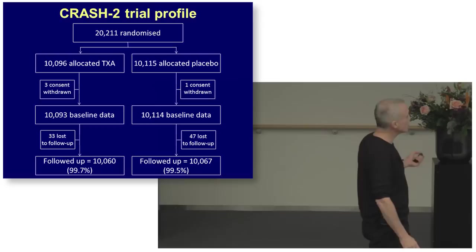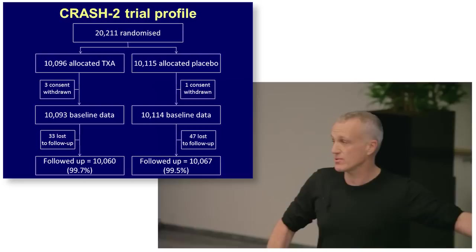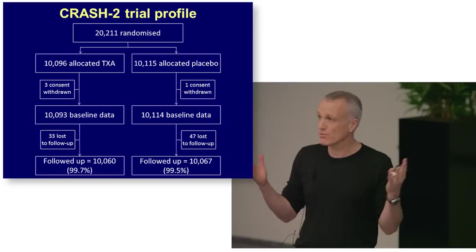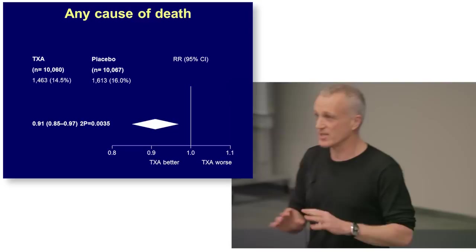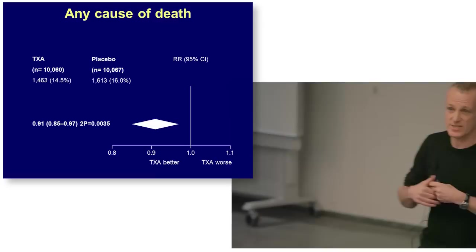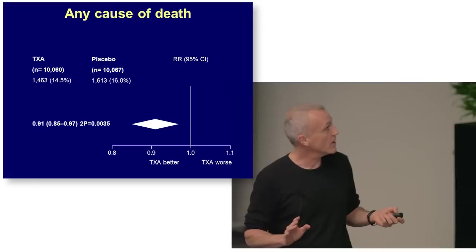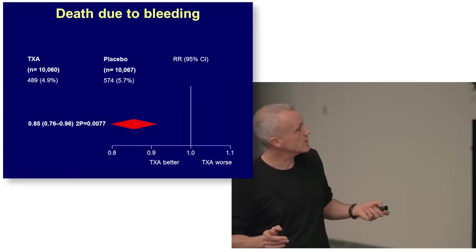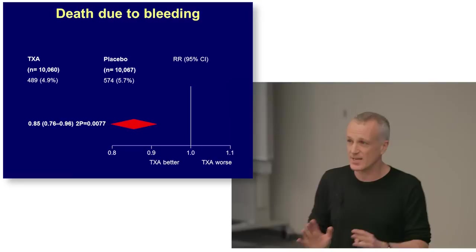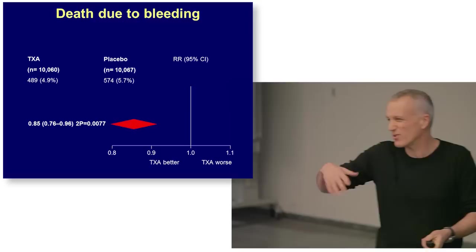So we did one — with a big group of doctors from all around the world, we randomised 20,211 trauma patients. 10,000 got tranexamic acid, 10,000 got placebo, and we got a beautiful result. I've been doing randomised trials for 20 years, and it's the only time I've ever found anything that's effective. Beautiful result — highly statistically significant reduction in mortality, highly statistically significant reduction in the chances of bleeding to death, which is how you'd think it might work.